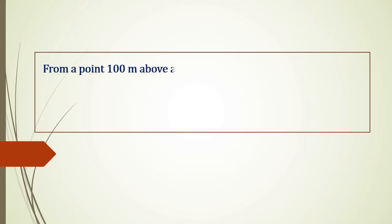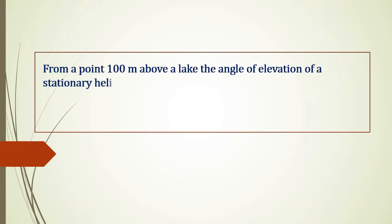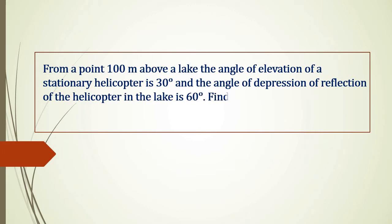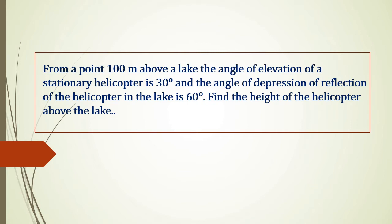From a point 100m above a lake, the angle of elevation of a stationary helicopter is 30 degrees and the angle of depression of the reflection of the helicopter in the lake is 60 degrees. Find the height of the helicopter above the lake.